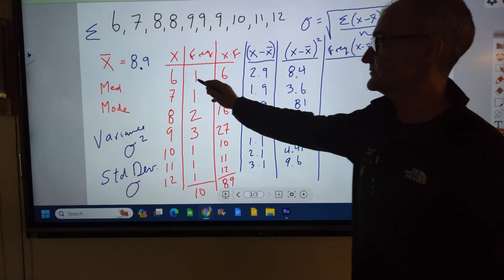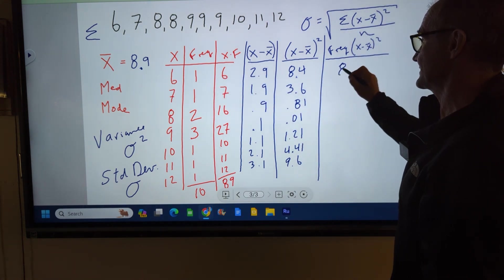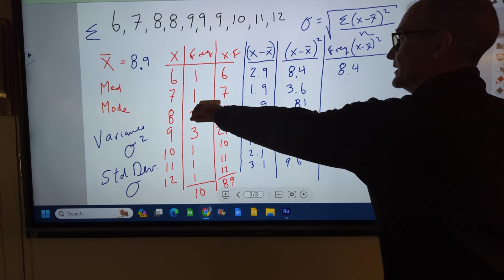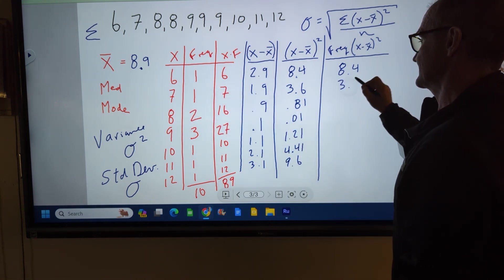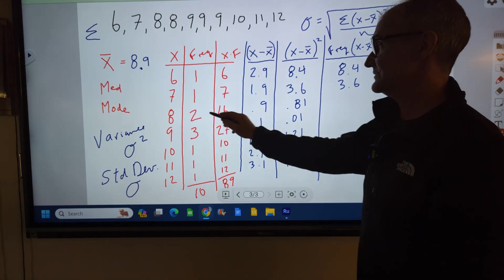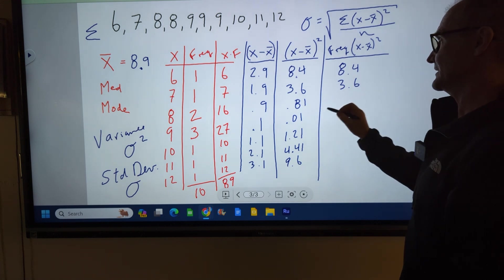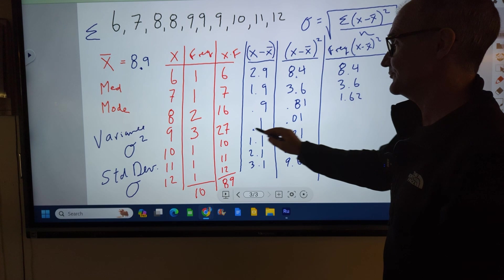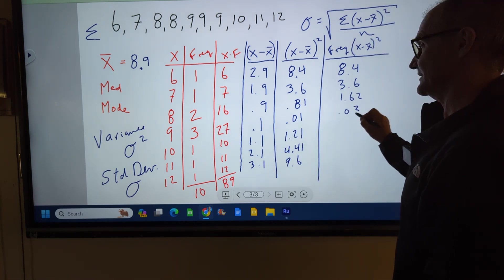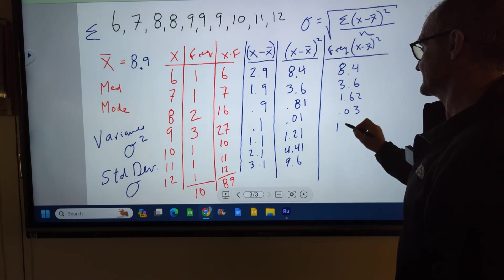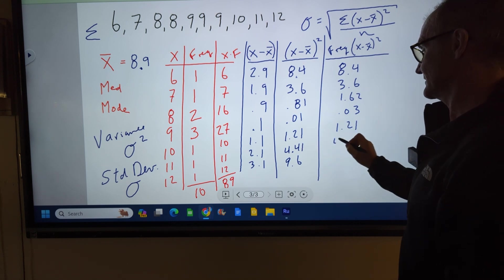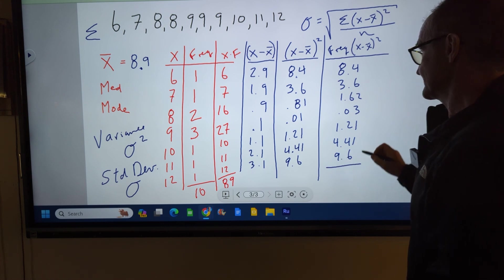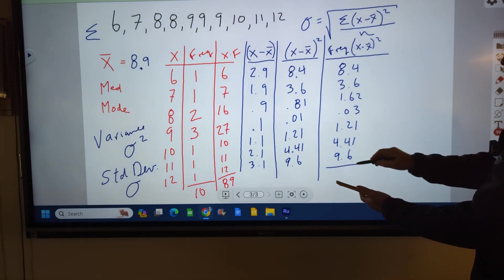I only have 1 value of 8.4, so this is 8.4. I have 1 value of 3.6, this is 3.6. But I have 2 values of 0.81, so 1.62. I have 3 values of 0.01, so 0.03. I have 1 value of this, 1 value of this, 1 value of this.